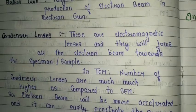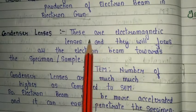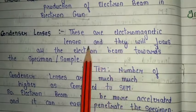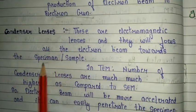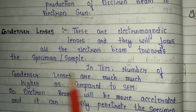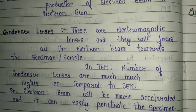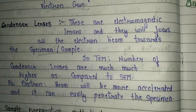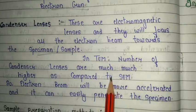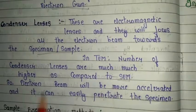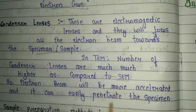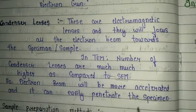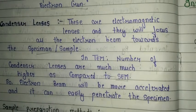The second important part is the condenser lens. These are electromagnetic lenses that focus all the electron beam toward the specimen or sample. In TEM, the number of condenser lenses is much higher compared to SEM, so the electron beam is more accelerated and can easily penetrate the specimen.